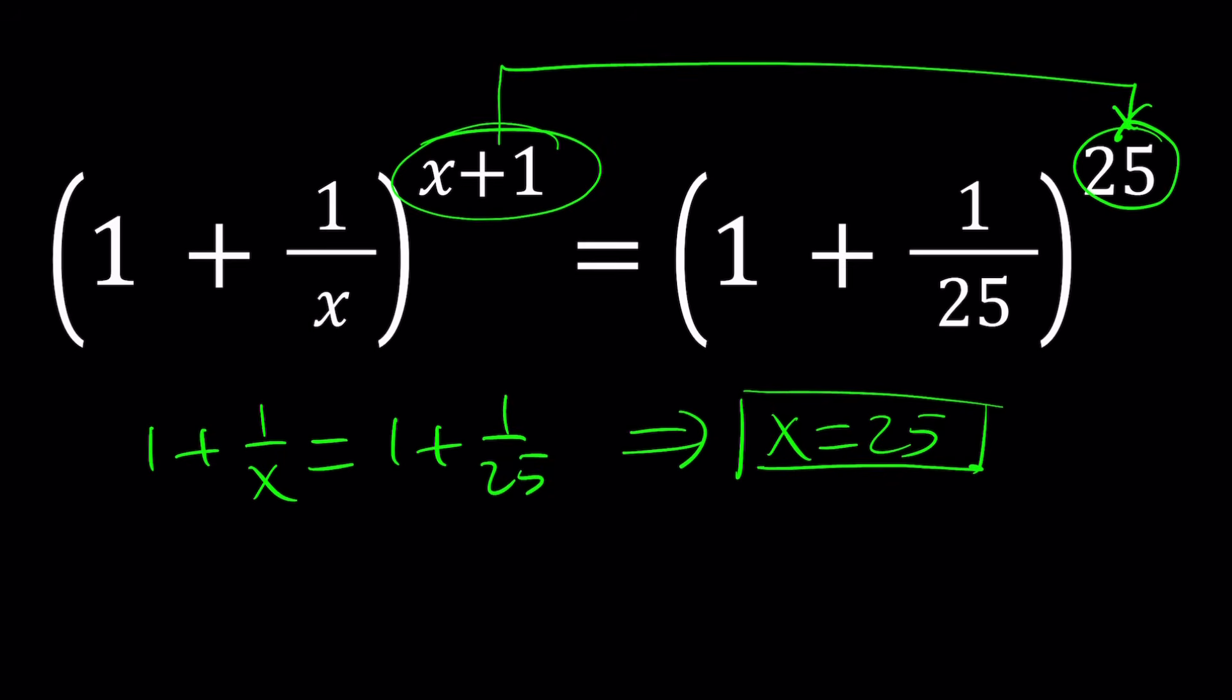Now, this probably reminds you of a very well-known limit as well. Think about it as x approaches infinity. Obviously, when x approaches infinity, we get something like 1 to the power of infinity, which is not always 1. I gotta tell you, be careful about those indeterminate forms.